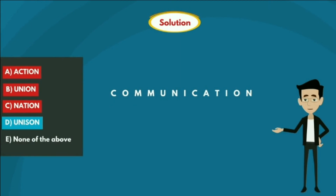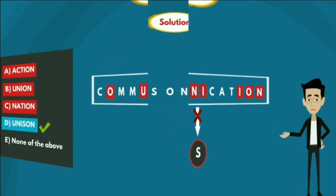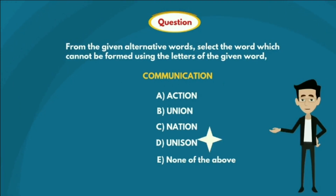Option D — UNISON. If we observe, the letters U-N-I-O-N are present in the given word COMMUNICATION, except the letter S. So this is the word which cannot be formed using the letters of the given word COMMUNICATION. So Option D is true, and the answer is Option D — UNISON.